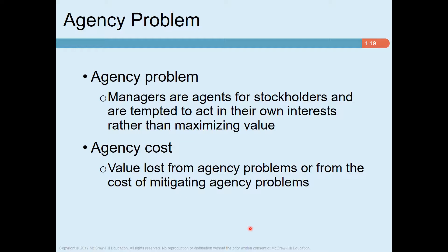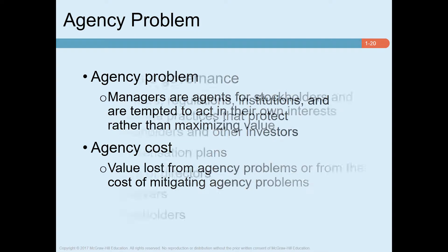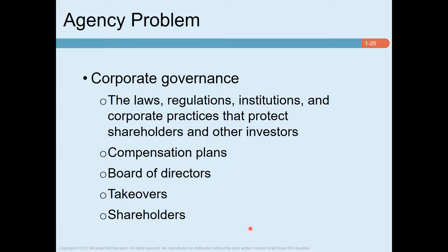As shareholders, we definitely want to reduce or eliminate the agency problem. To reduce it, corporations need to ensure corporate governance in the company. Corporate governance ensures that shareholders' interests are aligned with managers' actions. There are factors that force managers to take goals consistent with shareholders' wealth maximization. First, legal and regulatory requirements — managers have a legal duty to act responsibly and in the interest of investors.